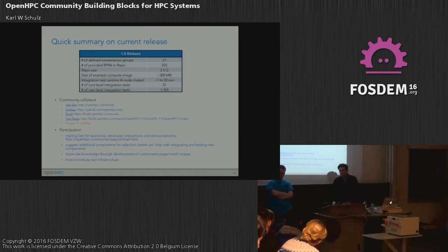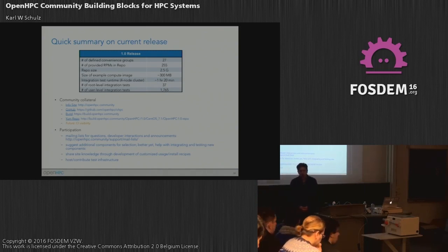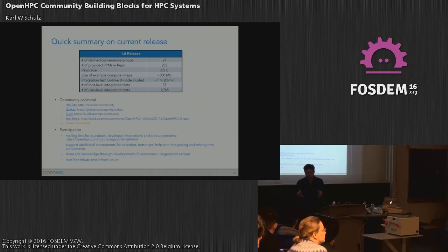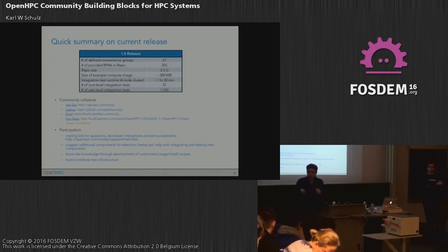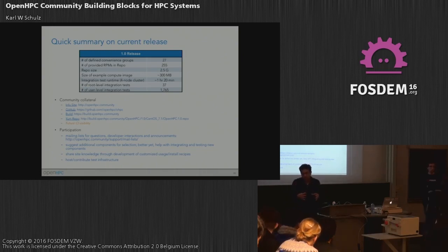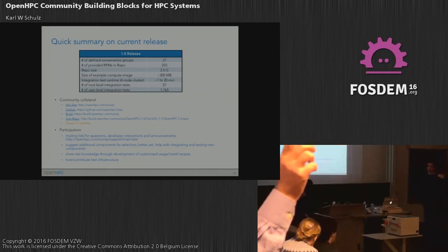Any questions for Carl? The provisioner in OpenHPC is an image-based provisioner. On your management node, you have a chrooted environment where you install all the RPMs you want on the compute node. Warewulf takes that chrooted environment, creates one file — an image — and when you PXE boot, you send over a kernel, boot into that, and pull over this image into RAM.